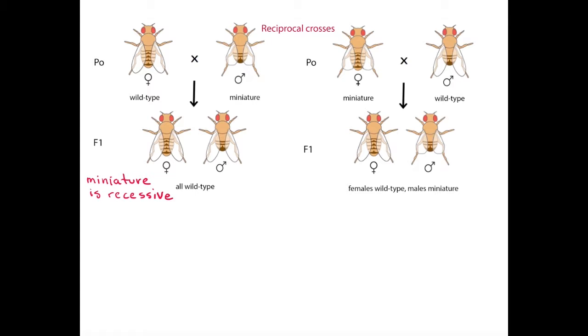From a cross of a miniature female with a wild-type male, we can conclude that the mutant miniature allele is recessive, and that it is located on the X chromosome. We see that the trait is passed down from the mother to her son.